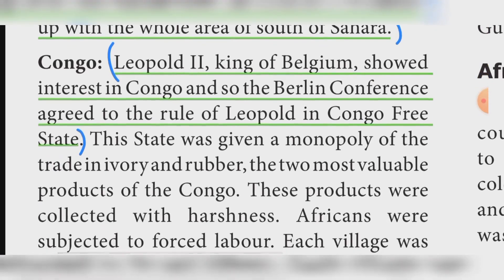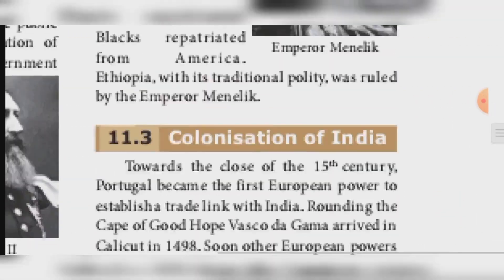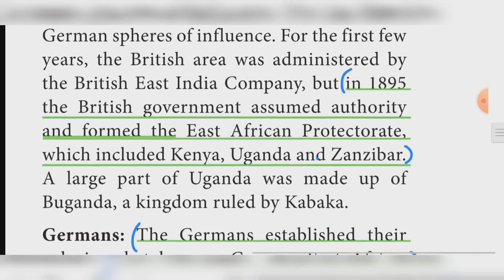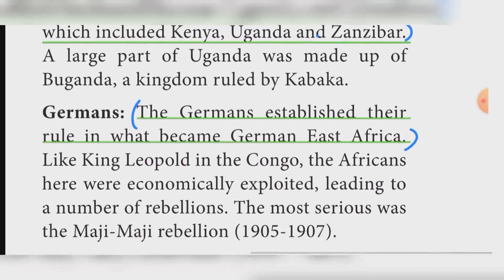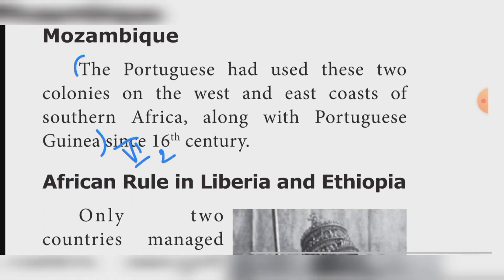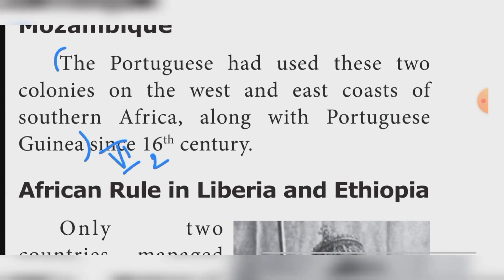Leopold II, King of Belgium, showed interest in Congo, and so the Berlin Conference agreed to the rule of Leopold in the Congo Free State. East Africa: In 1895 the British government assumed authority and formed the East African Protectorate, which included Kenya, Uganda, and Zanzibar. The Germans established their rule in what became German East Africa. The Portuguese held two colonies on the west and east coasts of southern Africa, along with Portuguese Guinea.